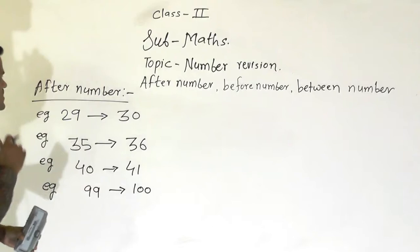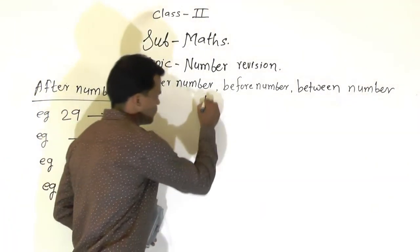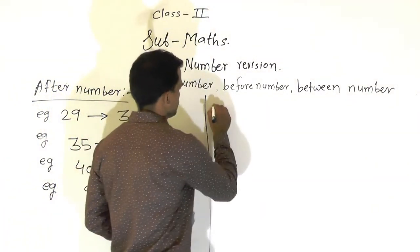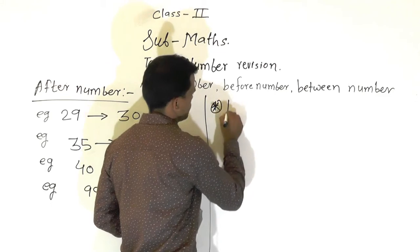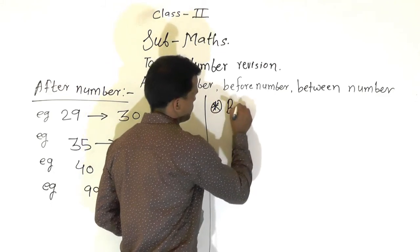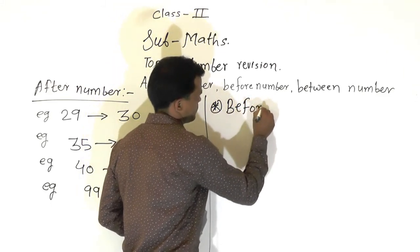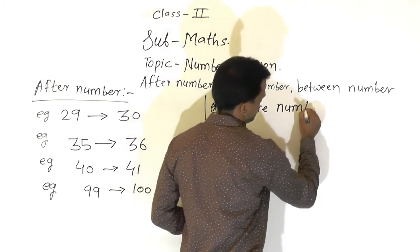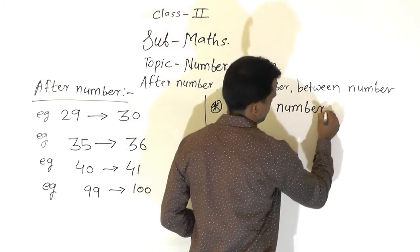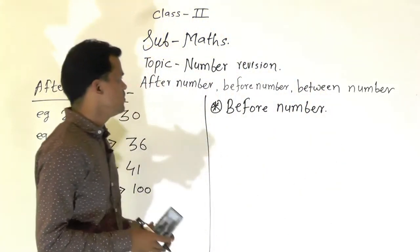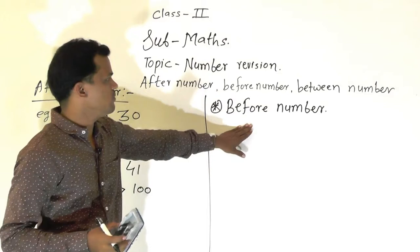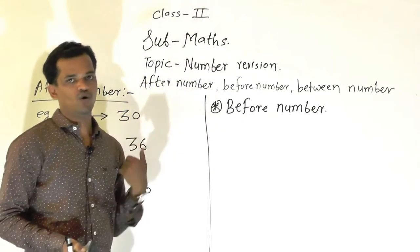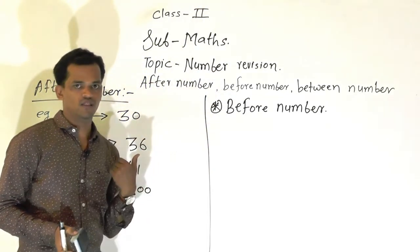Now we will see the next concept: before number. Before number means the number that comes before the given number.